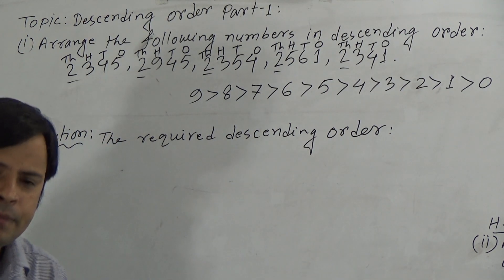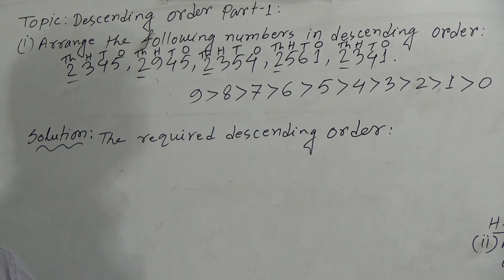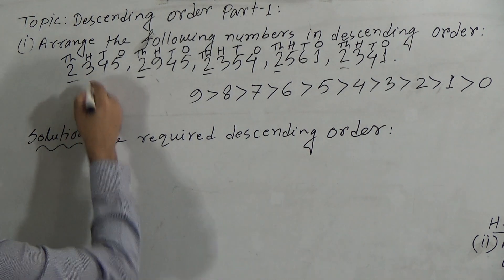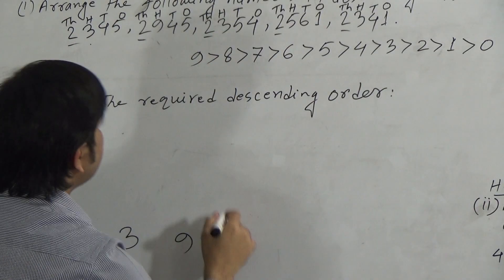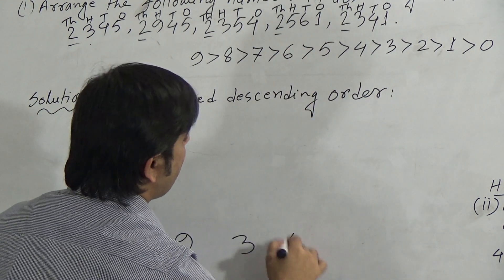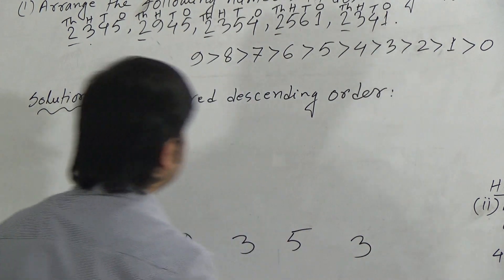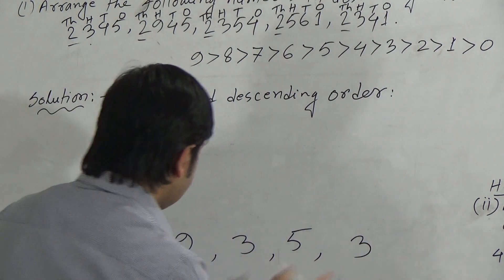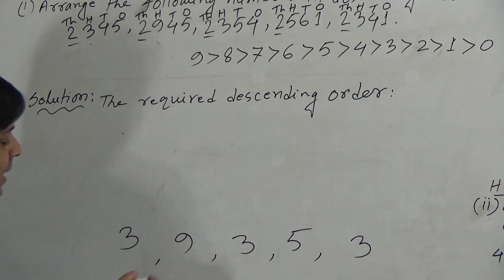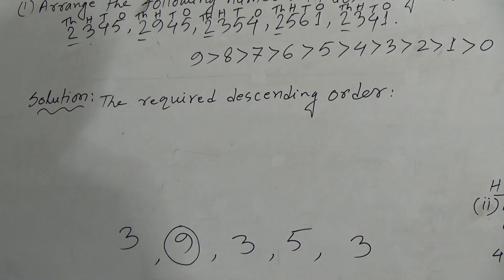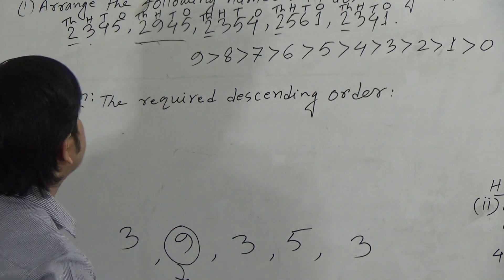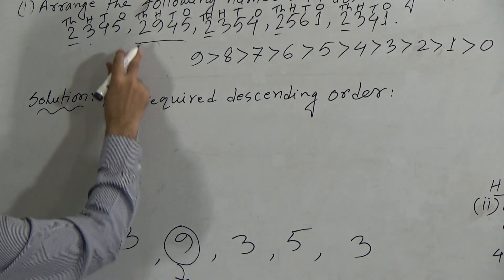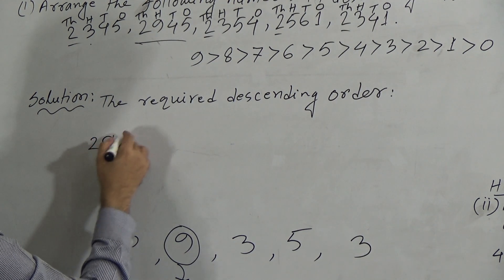The next position is hundreds. Now see the hundreds position: first number has 3, second number has 9, third has 3, fourth has 5, fifth has 3. Among these hundreds digits, 9 is the greatest one. So the number containing 9 in the hundreds position will be the greatest number. We can write 2,945 at first. Now we have taken that number, so we erase the 9 from our comparison.